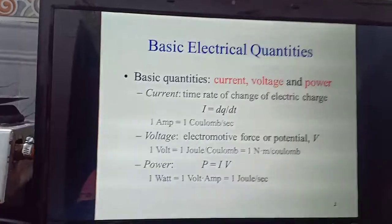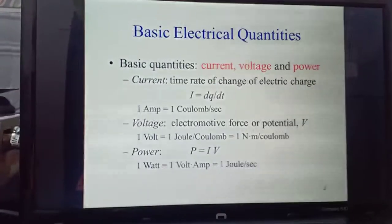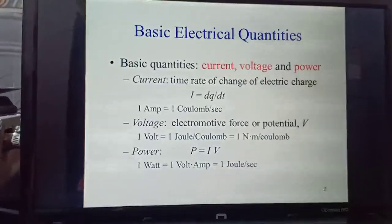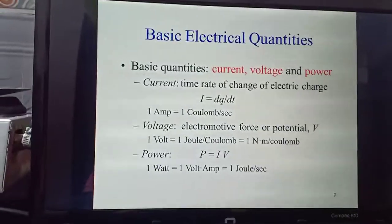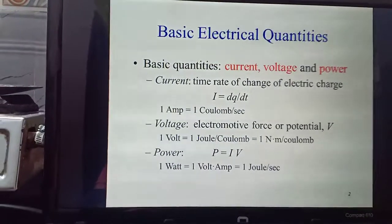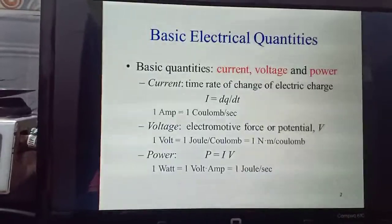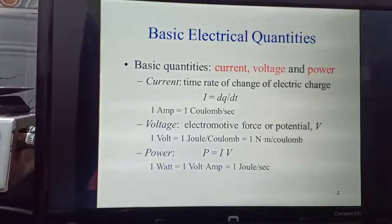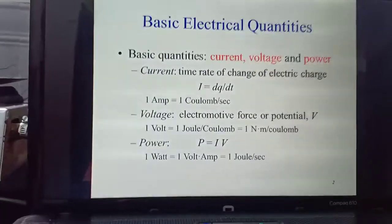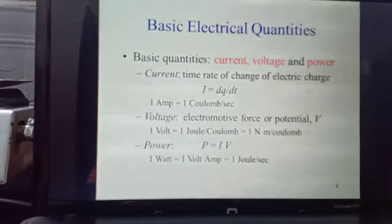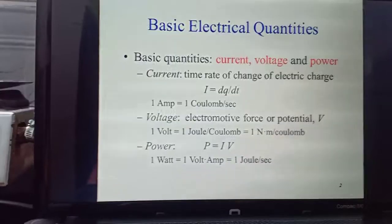So first of all, the three basic electrical quantities are current, voltage, and power. Current is time rate of change of electric charge, or you can say I equals charge per unit time, dQ by dT. Charge per unit time.